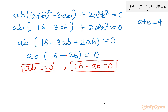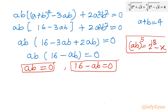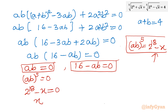Recall from our second equation that (ab)⁵ = 2¹⁸ − x. For the first case, ab = 0, so (ab)⁵ = 0, which gives 2¹⁸ − x = 0, and therefore x equals 2 raised to the power 18. This is our first candidate solution — we will verify it shortly.